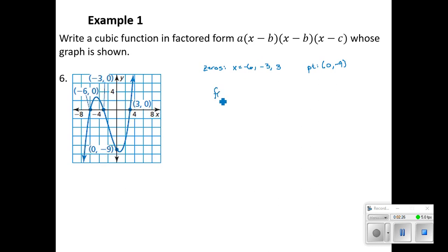Plugging the zeros into the factors, we get (x + 6), (x + 3), and (x - 3). However, we don't know what this a term is. We have an idea that because it's a cubic function, and it is rising to the right, falling to the left, our end behavior, that indicates that a should be positive. But we need to use this point to find out definitively what a is equal to.